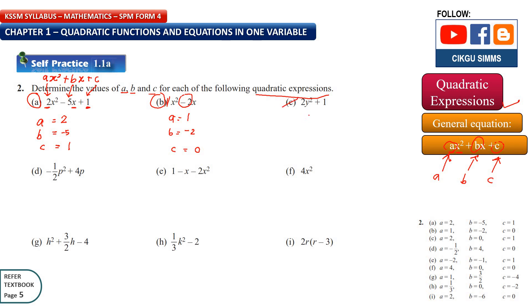Question 2c: 2y squared. The variable here is y, and in front of y squared is 2, so a is 2. There is no y to the power of 1, so that coefficient must be 0 — because 0 times y is nothing. So b is 0 because there is no y. And then c is a constant, which is 1.